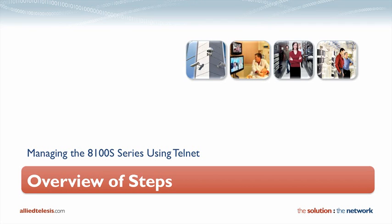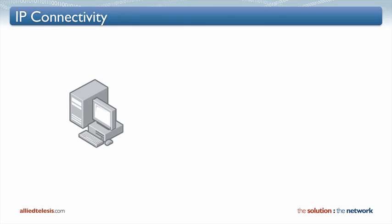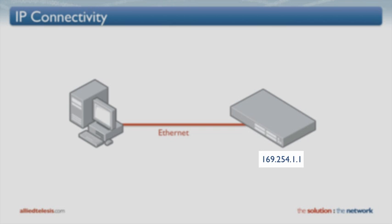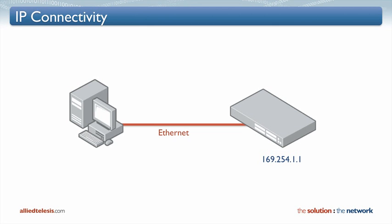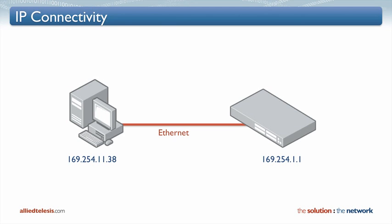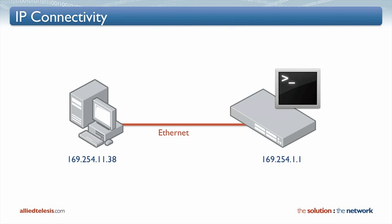Before we start it will be useful to understand exactly what's involved in Telneting to the switch to change its IP address. So you've got your computer, a switch, and an Ethernet cable between the two. The switch with factory default settings has an IP address of 169.254.1.1, a link local address. Your computer will automatically assign itself a link local address of 169.254.something — in this case in our example 11.38. Now we should be able to drop to a Telnet client on the PC and Telnet to the switch, which gets us access to the command line interface.